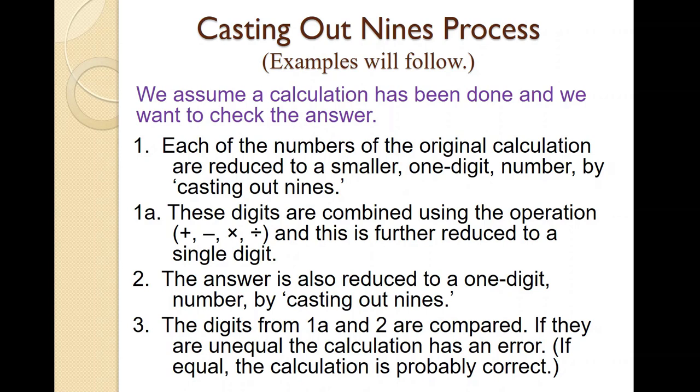We assume we have made a calculation, and we'd like to check the answer. Step 1. For each of the numbers of the original calculation, we reduce them to a smaller one-digit number by using the casting out nines process, which I'll be showing you. Then we take each of these digits and combine them using the operation from our calculation, and further reduce this using casting out nines again to a single digit.